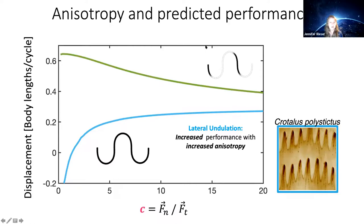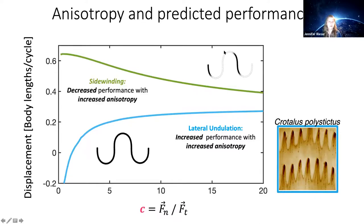For sidewinding, the only difference in the model is the portion of the animal on the ground at any moment. Sidewinders lift portions of their body as they move — previous studies found about 34% of the body is on the ground at any one time. Changing the model to reflect this, we see decreased performance as anisotropy increases.